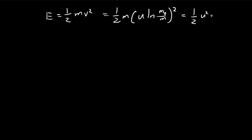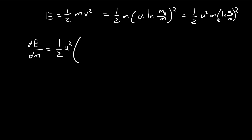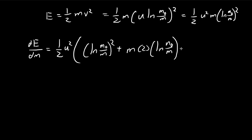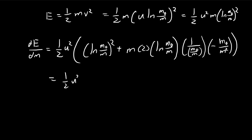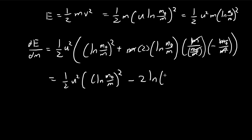We differentiate energy, pulling all the constants out first. Using the product rule, we keep one factor and differentiate the other. Then using the chain rule twice to differentiate the natural log squared expression, we differentiate the inner expression, which is 1 over m0 over m, times negative m0 over m squared. After simplification — the two m's cancel out and m0 cancels — we get negative 2 natural log of m0 over m.